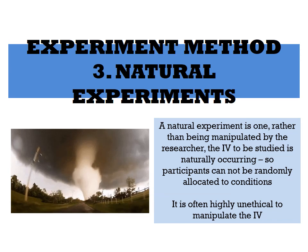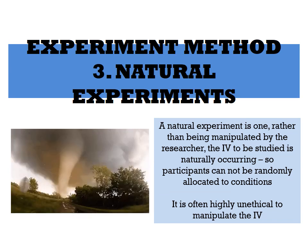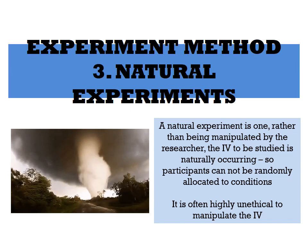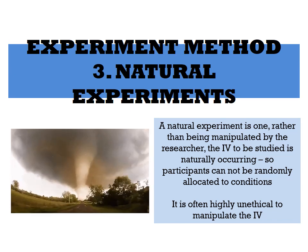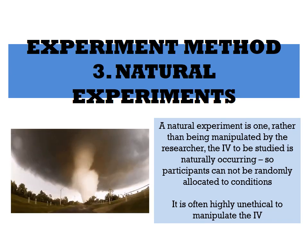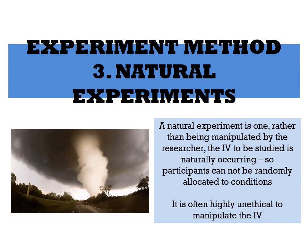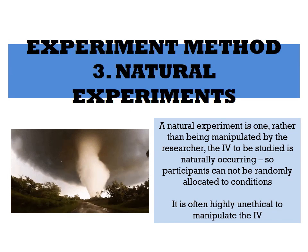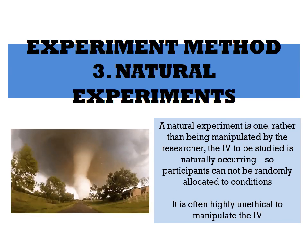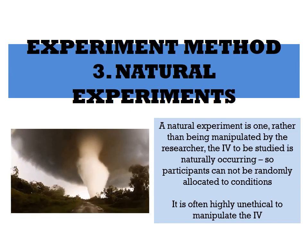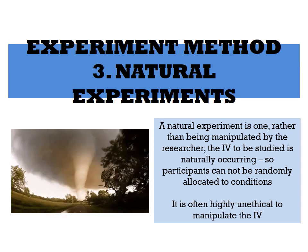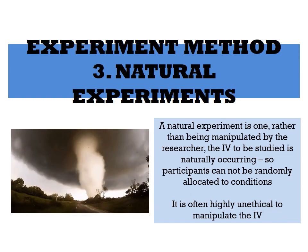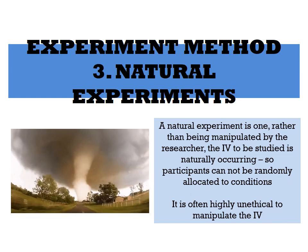It would be highly unethical to deliberately put children up for adoption just to conduct the study. Although it might not be impossible to manipulate the independent variable here, it would be highly unethical. So the independent variable has naturally occurring manipulation — the researcher themselves could not have manipulated it.